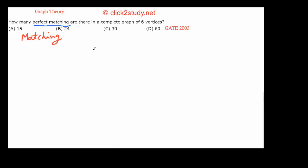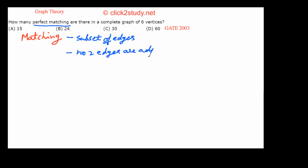Matching is a subset of edges from the graph. First point: it has to be a subset of edges from the graph you're given. Second point: no two edges in that subset should be adjacent.